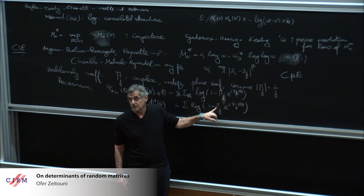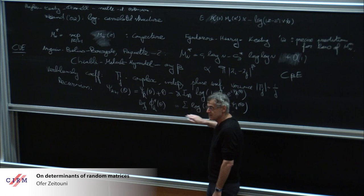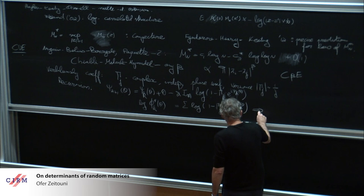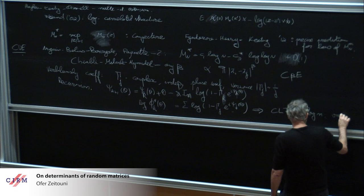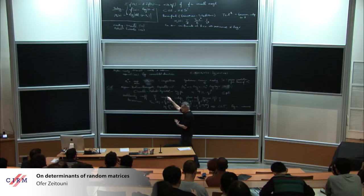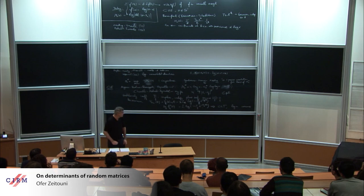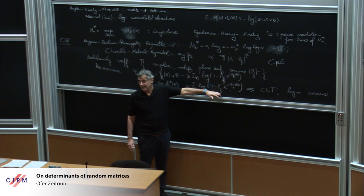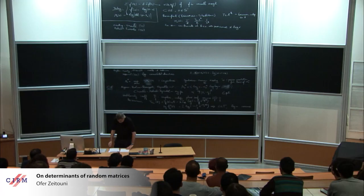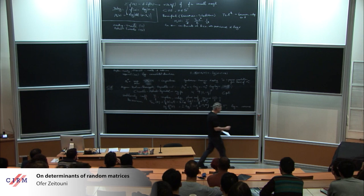We have a direct representation of something closely related to the log determinant as a sum of independent variables. From this, you get immediately CLT and CLT with variance log n. They were interested in the maximum, so you need to show correlations. For different theta, things are correlated. However, it turns out the correlation structure is very close to a tree structure, and that was key to the work.